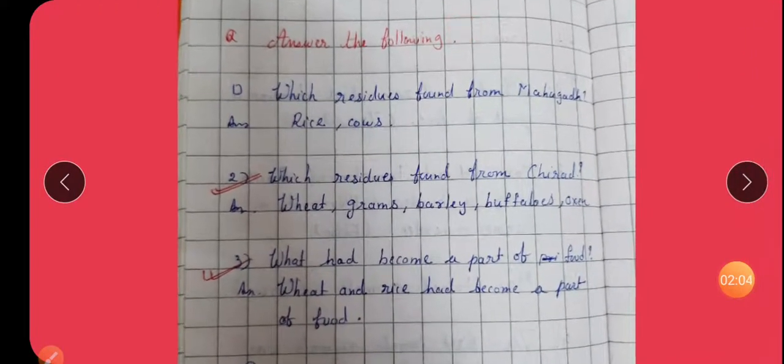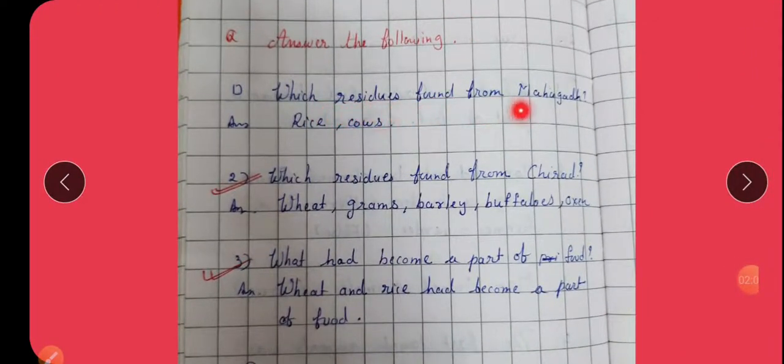Next question, answer the following. Which residues found in Mahagad? Rice and cows. Which residues found in Chirad? Wheat, gram, barley, buffalo, oxen.